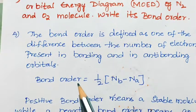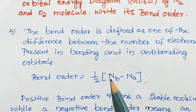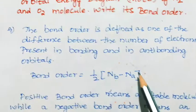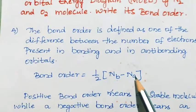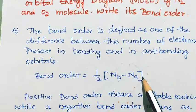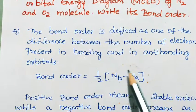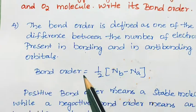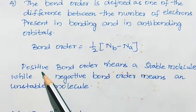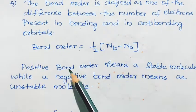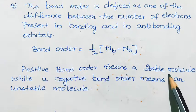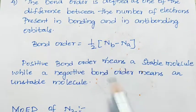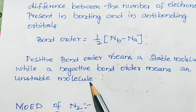Bond order is given as: half of (number of electrons in bonding orbitals minus number of electrons in anti-bonding orbitals). A positive bond order means a stable molecule, while a negative bond order means an unstable molecule.